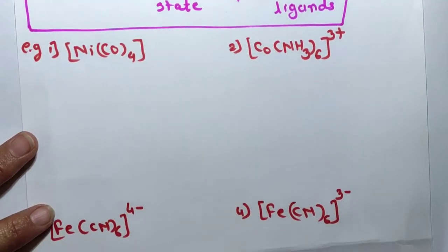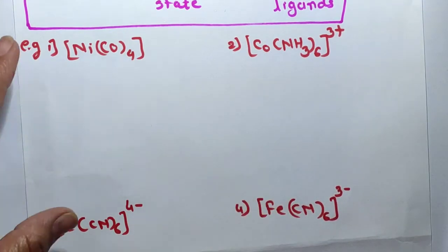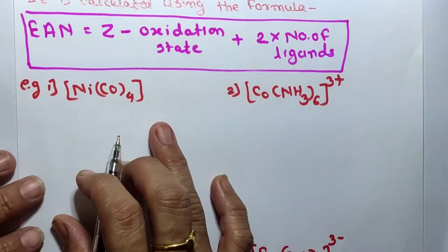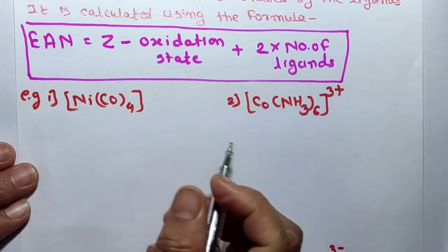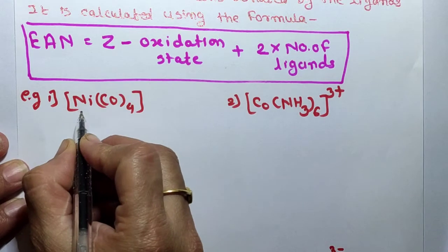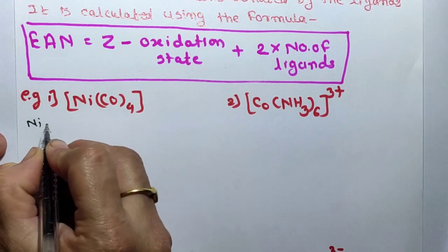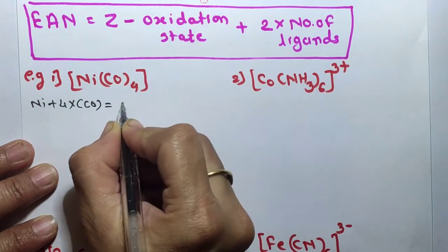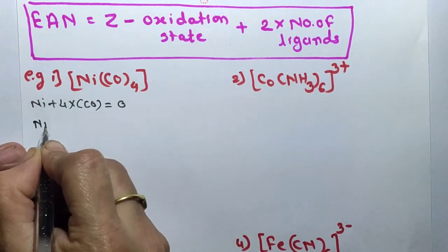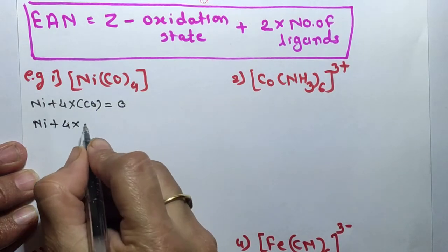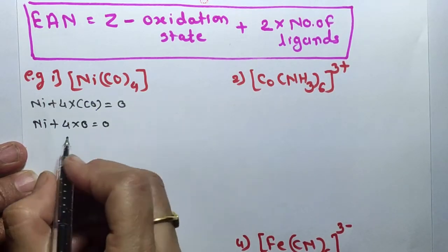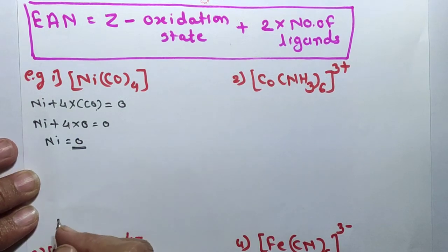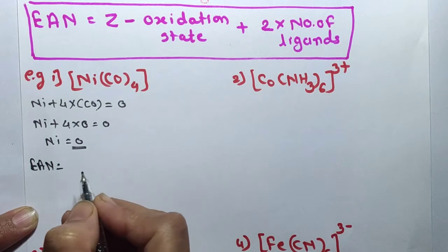Now let's find out the EAN and determine which complex is more stable. First, we find nickel's oxidation state. In Ni(CO)₄, nickel plus 4 into carbon monoxide equals charge zero. Carbon monoxide is a neutral ligand, so its oxidation state is zero. Therefore nickel's oxidation state is equal to zero.